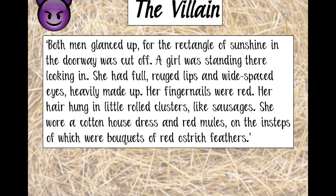But then we meet her for ourselves. This is how John Steinbeck introduces her: 'Both men glanced up, for the rectangle of sunshine in the doorway was cut off. A girl was standing there looking in. She had full rouged lips and wide-spaced eyes heavily made up. Her fingernails were red. Her hair hung in little rolled clusters like sausages. She wore a cotton house dress and red mules, on the insteps of which were bouquets of red ostrich feathers.' As she comes into the bunkhouse, the light is cut off — the rectangle of sunshine disappears — creating a sense of foreboding, potentially foreshadowing the negative impact she'll have on George and Lennie.